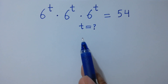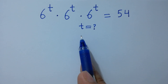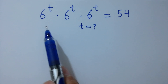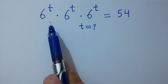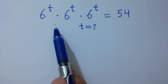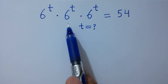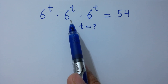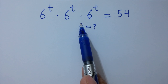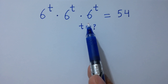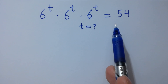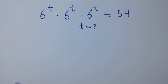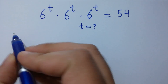Hello friends. Find the value of t if 6 to the power t times 6 to the power t times 6 to the power t equals 54. Let's have a solution.